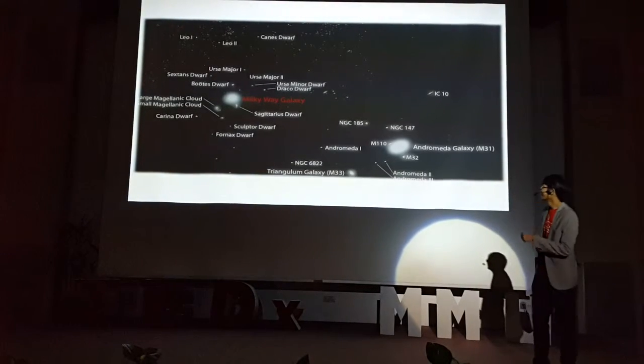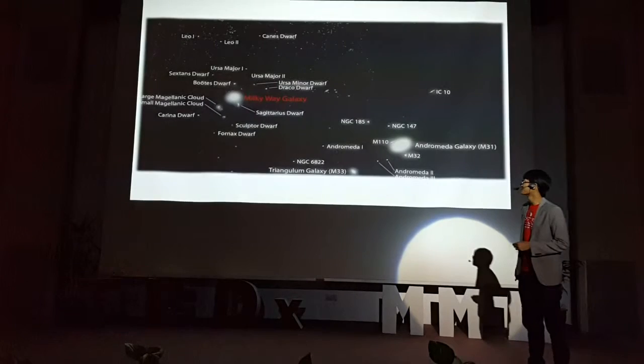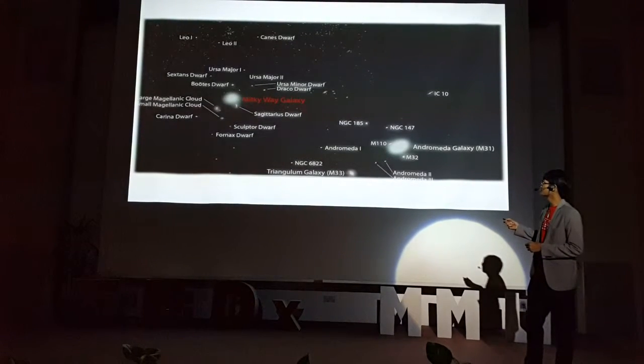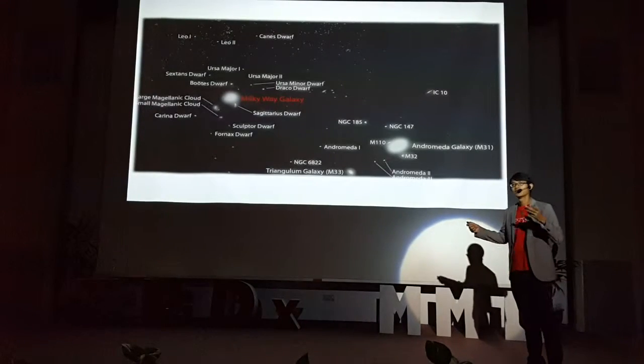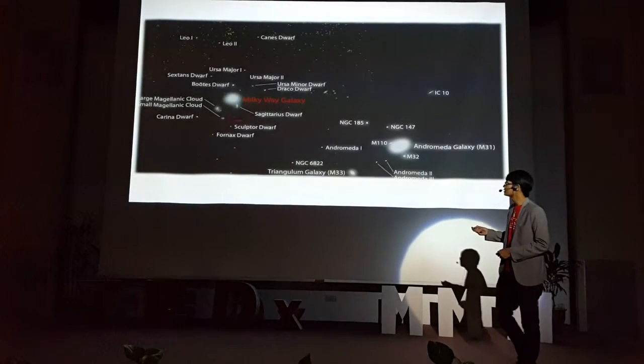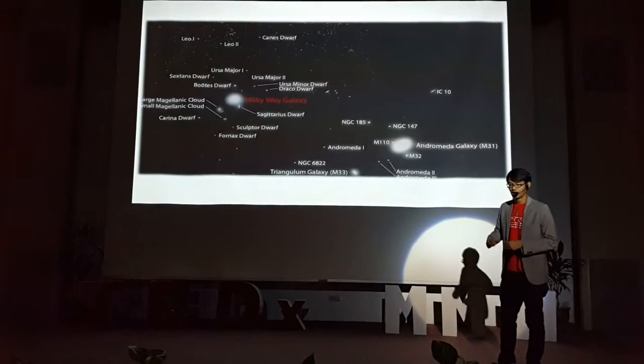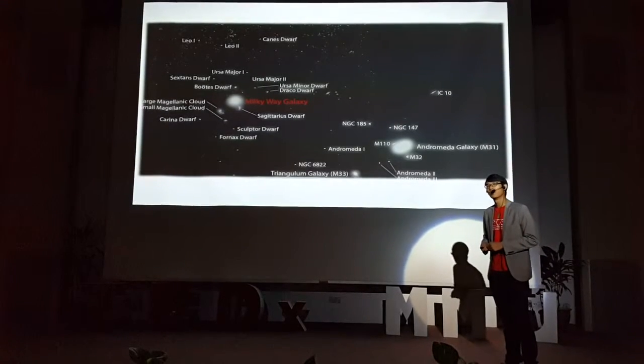I've always wanted to say that. Billions and billions of stars. You can see our galaxy, the Milky Way, is surrounded by much smaller dwarf galaxies, and like how satellites orbit the Earth, these smaller dwarf galaxies are gravitationally bonded.